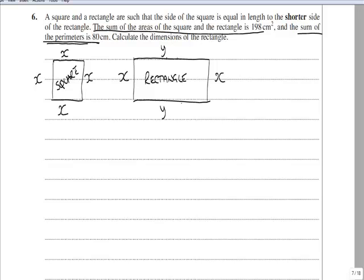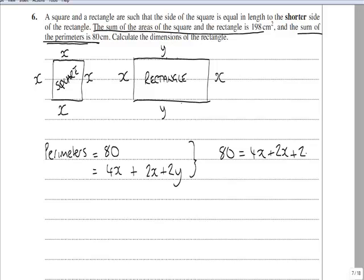And initially if we just look at perimeters we can see immediately that from the question that the perimeters of the two shapes is equal to 80, but I also know that the perimeters of the two shapes in terms of x and y are, well, for the square 4x and for the rectangle 2x plus 2y. However these can be equated to give us an equation, 80 is equal to 4x plus 2x plus 2y.